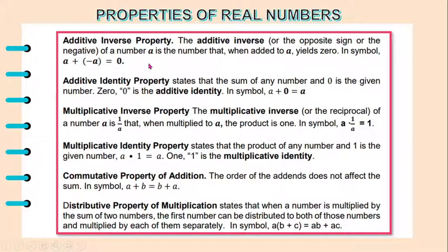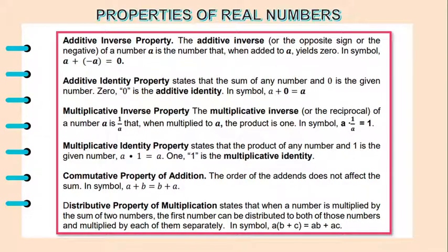Or, you can use transposition as a shortcut. We also have the additive identity property, which states that the sum of any number and 0 is the given number. So 0 is the additive identity. In symbol, a plus 0 is equal to a.